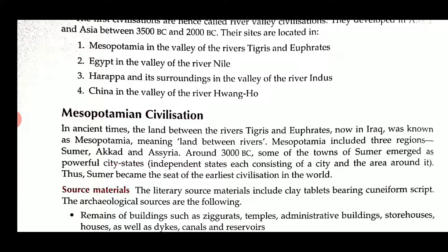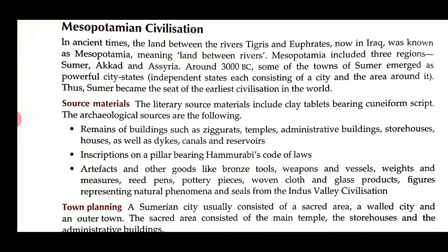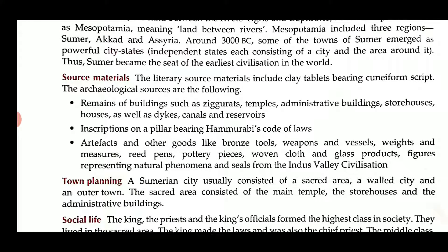Mesopotamia includes three regions. Sumer occupied an area around 3000 BC. Some of the towns of Sumer emerged as powerful city-states — independent states, each consisting of a city and the area around it. This Sumer became the site of the earliest civilization in the world. We can say Mesopotamian civilization was the earliest civilization.